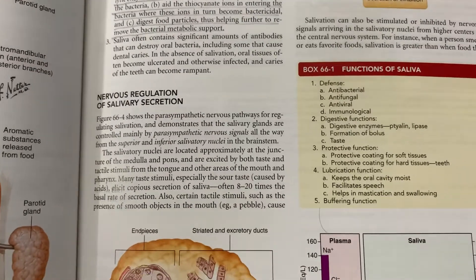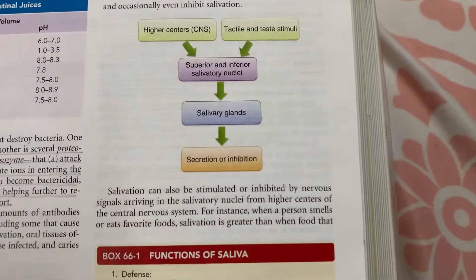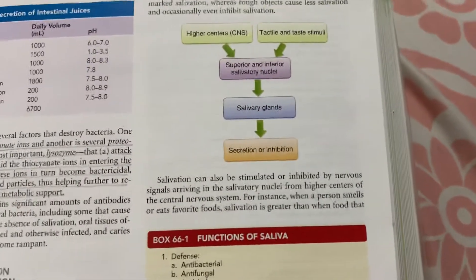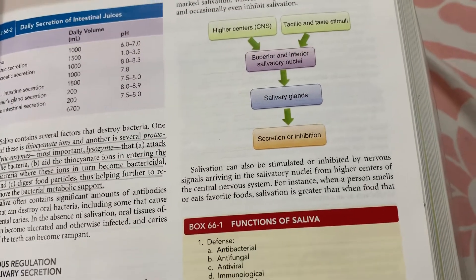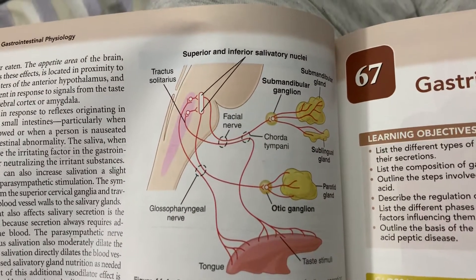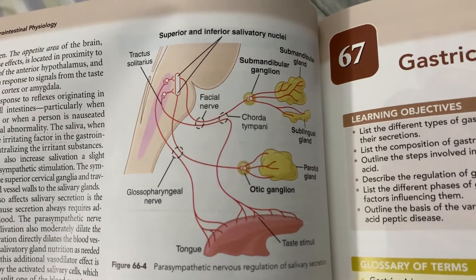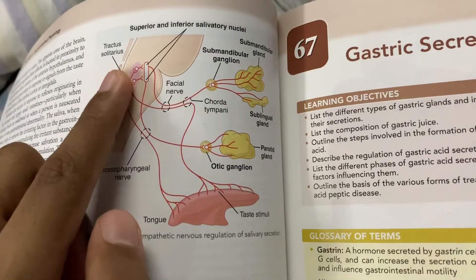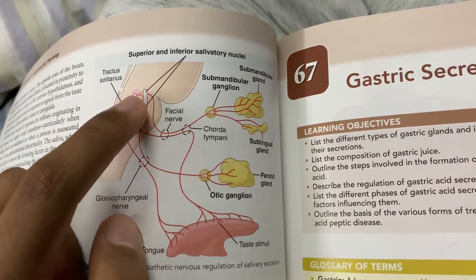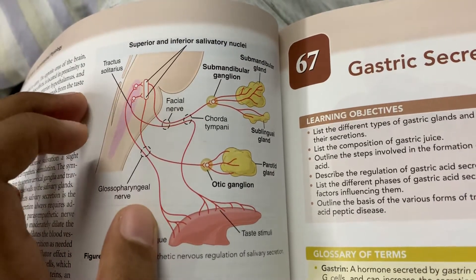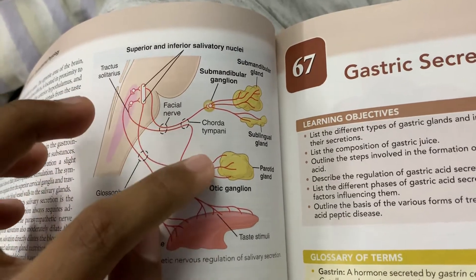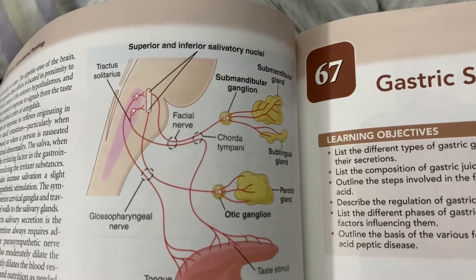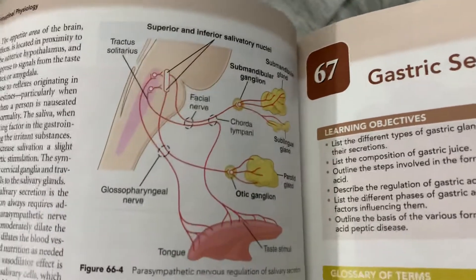Coming to the nervous regulation of salivary secretion: the salivatory nuclei are located approximately at the juncture of the medulla and the pons — the superior and inferior salivatory nuclei. They are excited by both taste and tactile stimuli from the tongue and other areas of the mouth and pharynx. The nucleus of tractus solitarius receives afferent taste sensations via the 7th, 9th, and 10th nerves from the tongue. From the nucleus of tractus solitarius, there are connections to the superior and inferior salivatory nuclei, which through the glossopharyngeal nerve go to the otic ganglion and innervate the parotid gland, and through the facial nerve go to the submandibular ganglion and innervate the submandibular and sublingual glands.